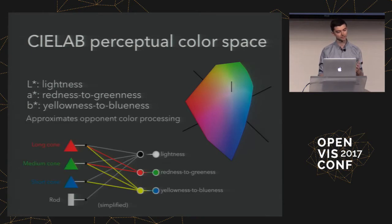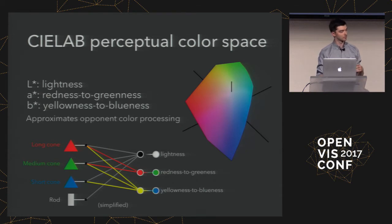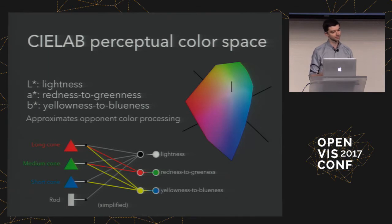This is roughly based on opponent color processing. We have cones and rods in our eyes, and from that we get a signal roughly corresponding to red, green, and blue. Then your brain transforms that through a process, and out you get three different color channels: Lightness, A which is redness to greenness, and B which is yellowness to blueness.